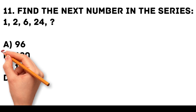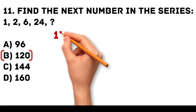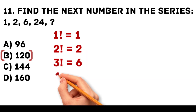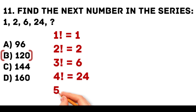Answer: B. 120. The series represents the factorials of natural numbers. 1 factorial equals 1. 2 factorial equals 2. 3 factorial equals 6. 4 factorial equals 24. 5 factorial equals 120.